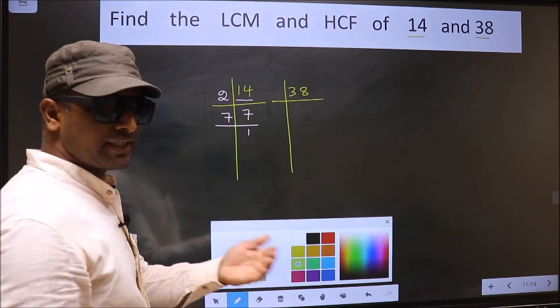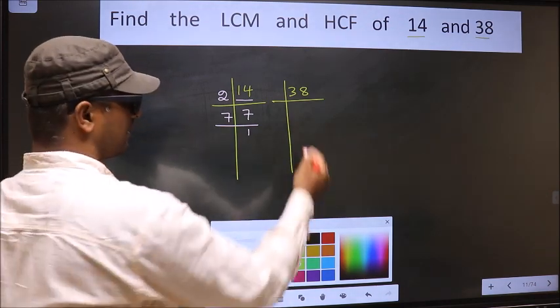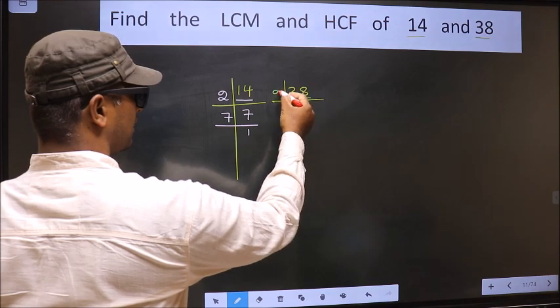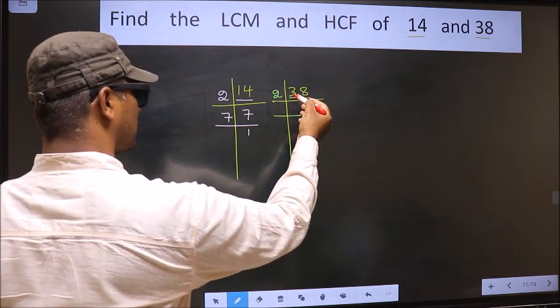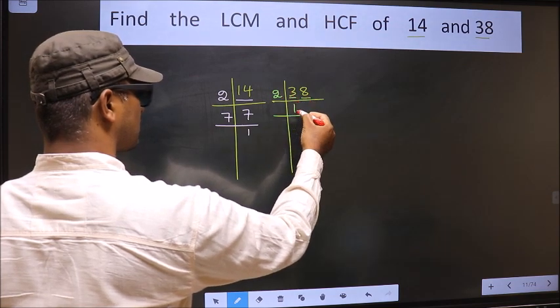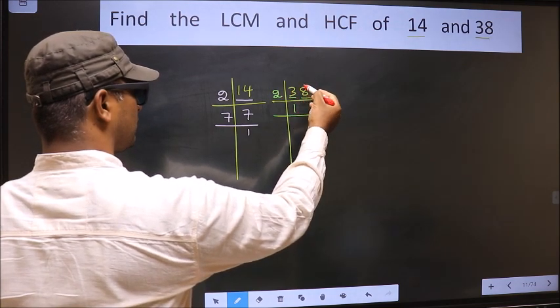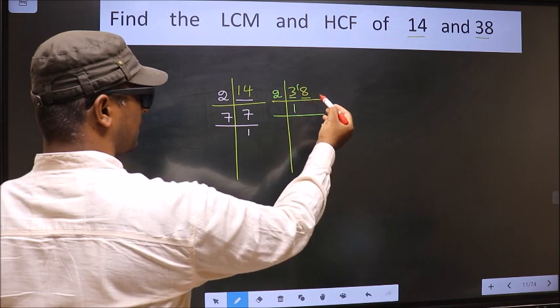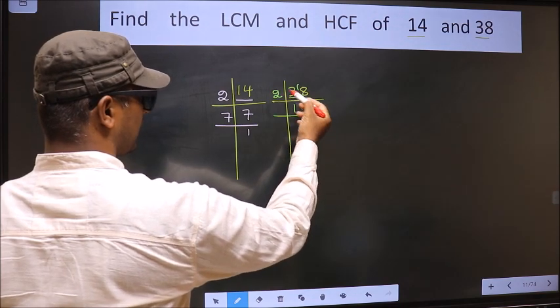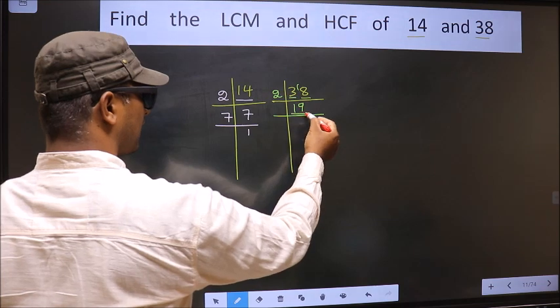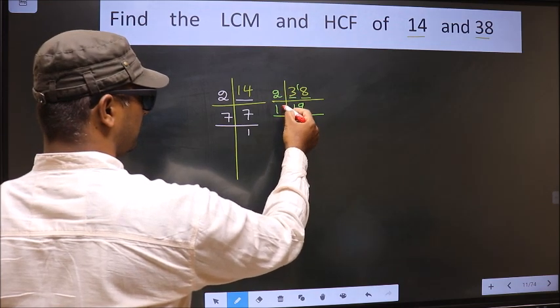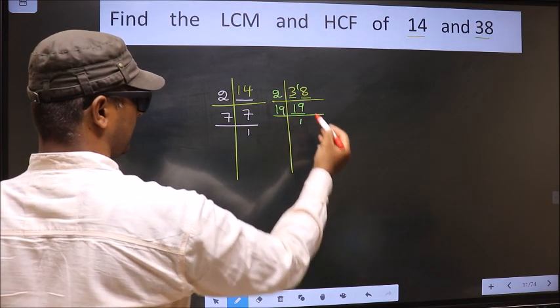Now the other number. Last digit 8, even, so we take 2 here. The first digit 3, a number close to 3 in 2 table is 2 times 1 is 2. 3 minus 2 is 1, 1 carried forward making it 18. When do we get 18 in 2 table? 2 times 9 is 18. Now here we have 19. 19 is a prime number, so 19 times 1 is 19.